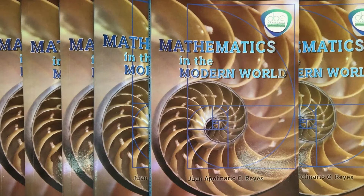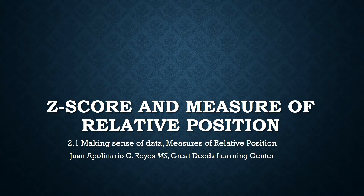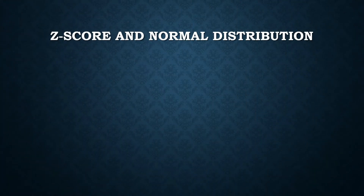We shall begin our discussions about measures of relative position. We shall devote three or four videos for this topic, but we shall begin with the z-score. The z-score is a measure of the position of a data value in relation to another.